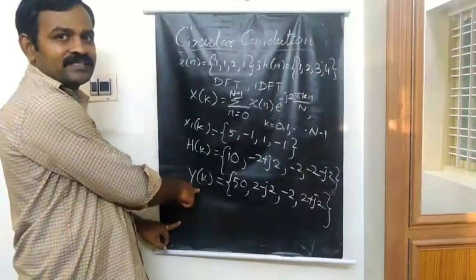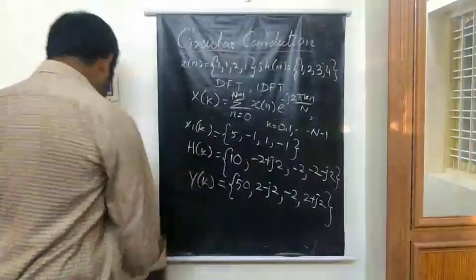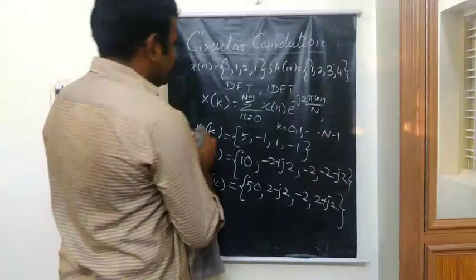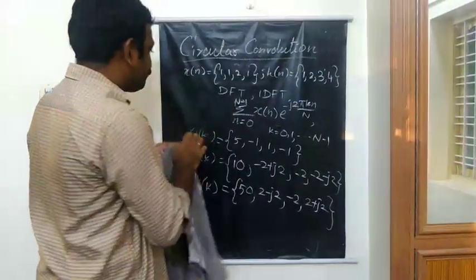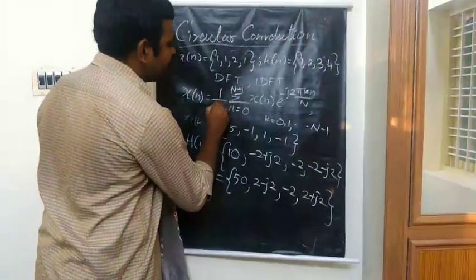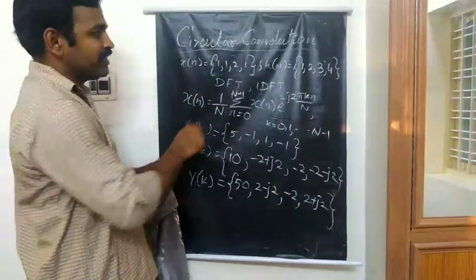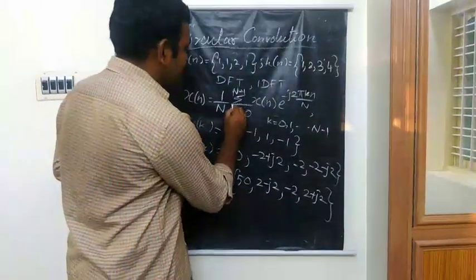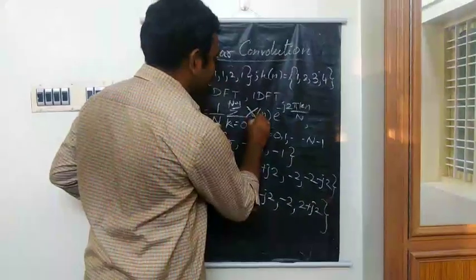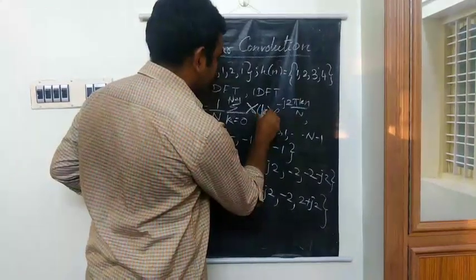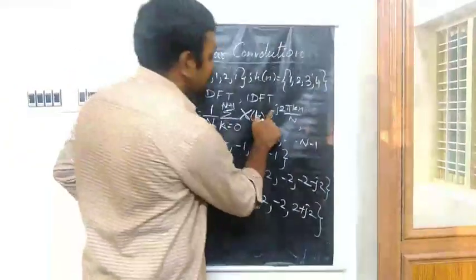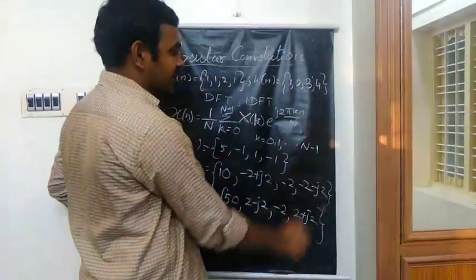So write the formula for Inverse Discrete Fourier Transform. This is a small change. Your IDFT formula is X of n equals 1 by N, in this case N is 4. And here K varies from 0 to N minus 1, and you are having X of k.